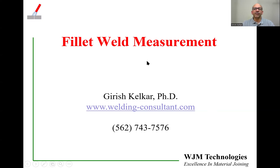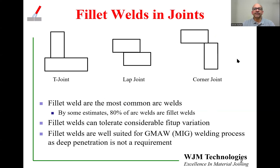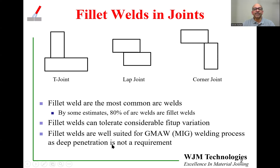Today we're going to talk about fillet weld measurements. There are many fillet joints used in industry; three of them are T joints, lap joint, and corner joint. By some estimates, fillet welds account for up to 80% of all arc welds made. Fillet welds can tolerate considerable fit-up variation, so they do not require perfect fit-up and you can use parts which are stamped and sheared. Fillet welds are also suitable for GMAW or MIG welding because deep penetration is not a requirement, making them one of the most common welds in the automotive industry.